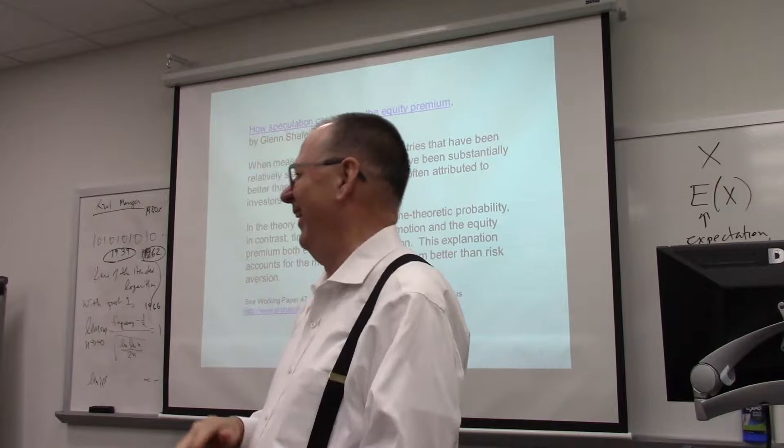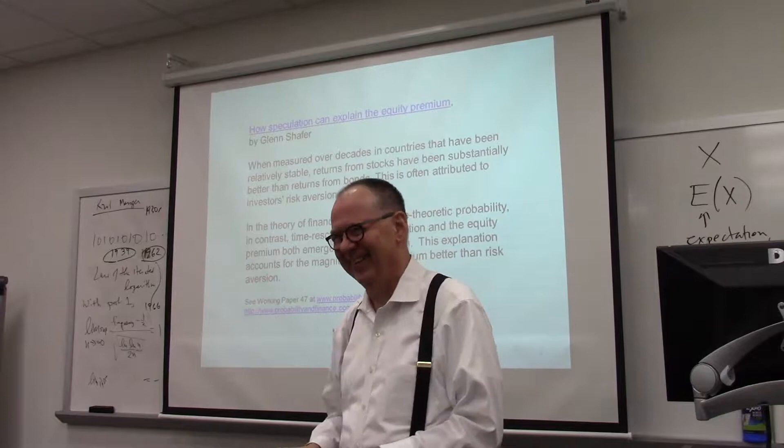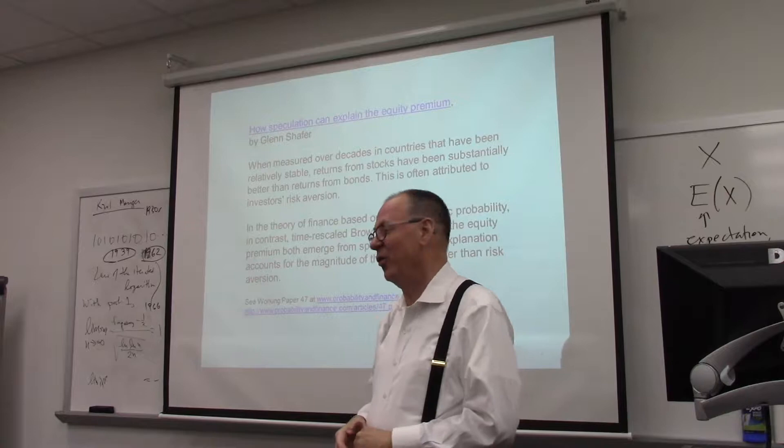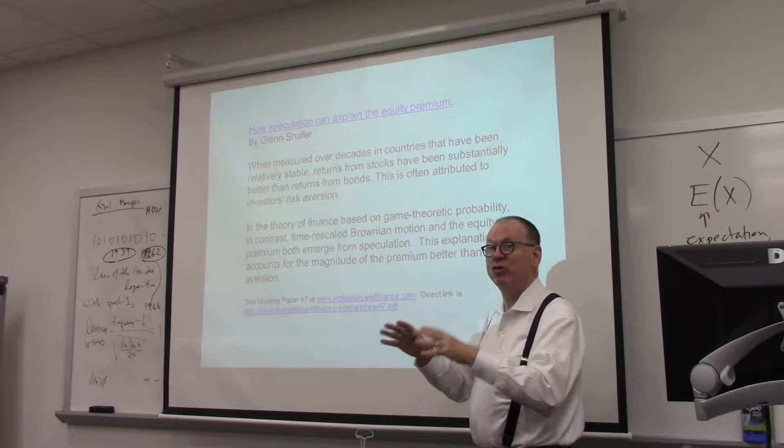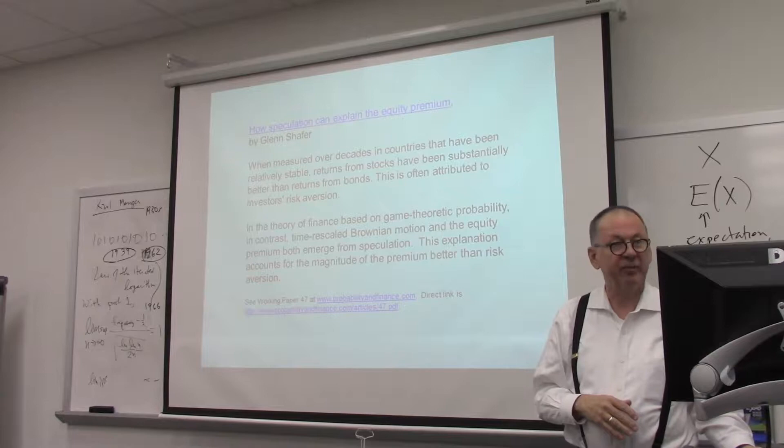Some people think it's because of objective probability. But the question is, why do the objective probabilities look like that? In this theory, this apparent stochasticity is an emergent phenomenon — it just results from the speculation.